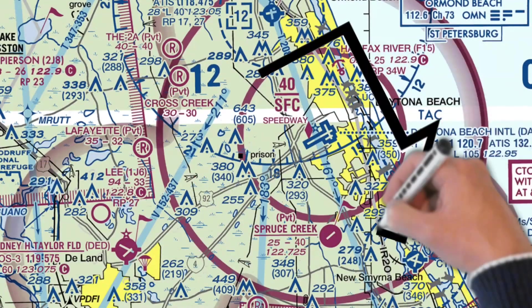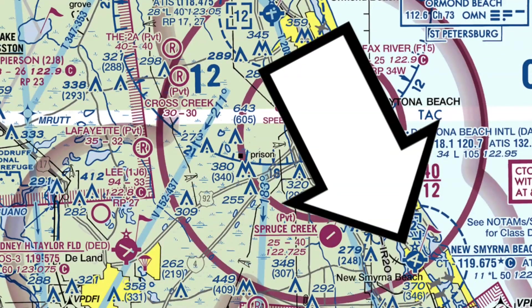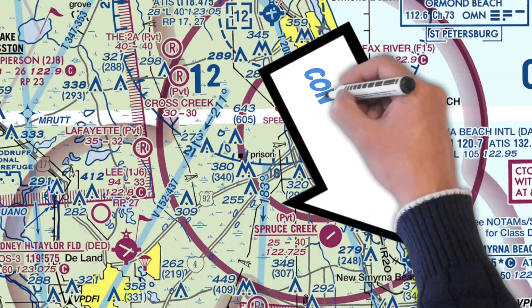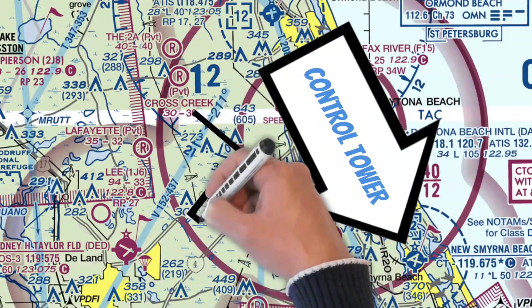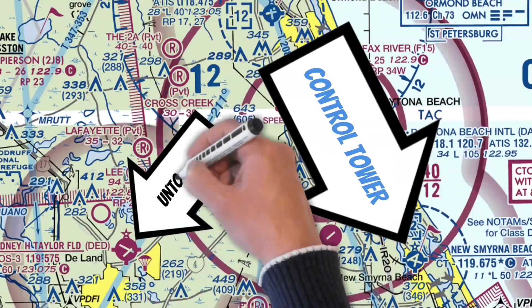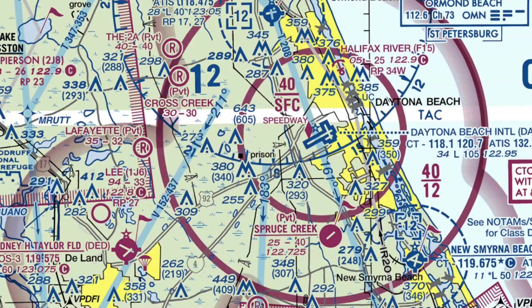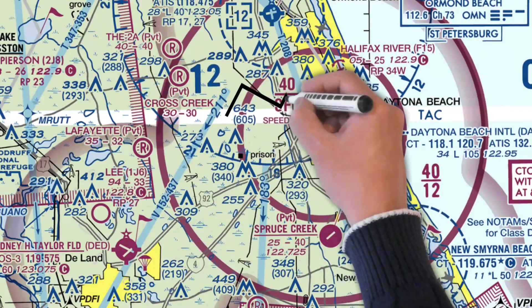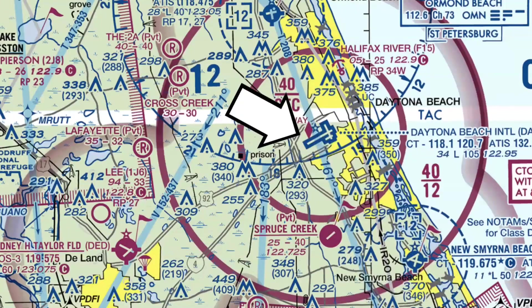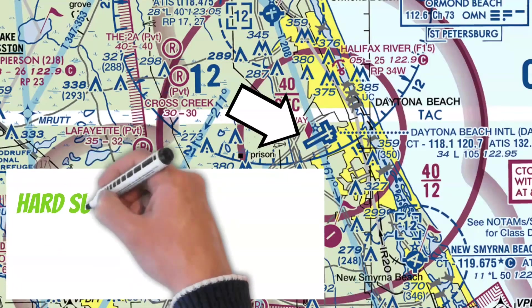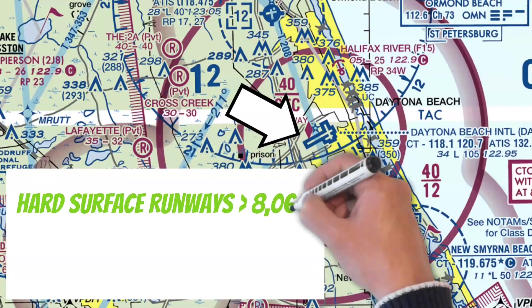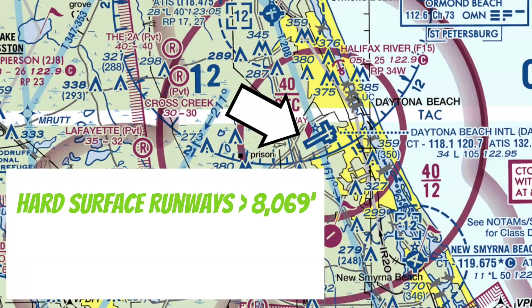Looking back at our VFR sectional, you'll notice that some of these airports are blue. This lets us know that the airfield has a control tower, meaning any magenta airfield is untowered. Take a look at this bigger airport in Class C airspace — it's also blue, so we know it has a control tower. Notice this airport is no longer surrounded by a circle; instead, the runways are outlined with dark markings. When we see this, we know that this airport has at least one hard surface runway greater than 8,069 feet long.